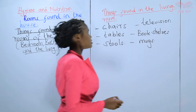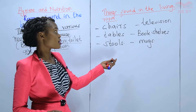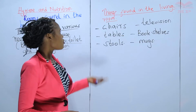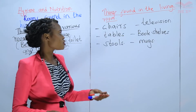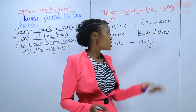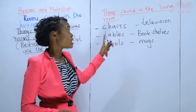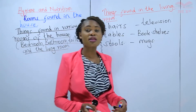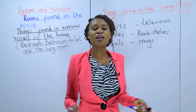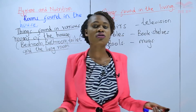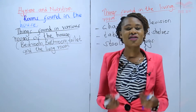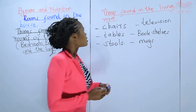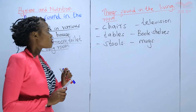You can also have mugs in the living room, because you can be taking coffee or tea while you are watching television or reading your storybooks — that's why you have bookshelves. Remember, a living room is a place where we can socialize, either by reading storybooks, telling stories, cracking jokes, or just exchanging talks. These are some of the things found in the living room.